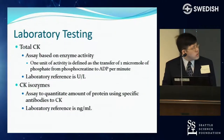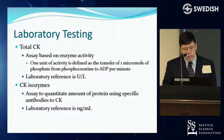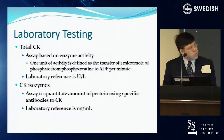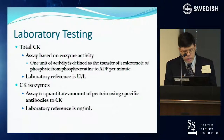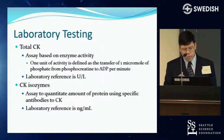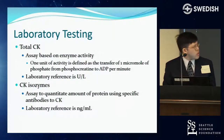When you measure CK, the assay is based on the enzymatic activity of CK — measuring the amount of activity transferring phosphate from phosphocreatine to ADP. The unit you get is units of activity per liter. There are also different assays for CK isozymes; the CK-MB fraction measures the quantity of protein, which is a different number and can't be directly compared.